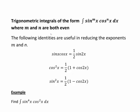When we're having a look at this, the following identities are useful in reducing exponents m and n when we're looking at integrals of this general form with both the powers being even. So let's see which ones of these three identities are going to help us out in this particular example.